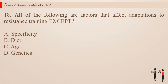Question 18. All of the following are factors that affect adaptations to resistance training except: a. Specificity. b. Diet. c. Age. d. Genetics.